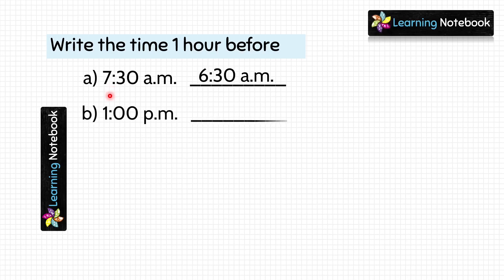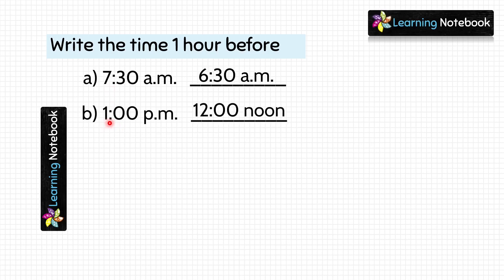Next, 1 hour before 1 PM will be 12. And since we are given this time in PM, 1 hour before would be noon. Time would be 12 noon.